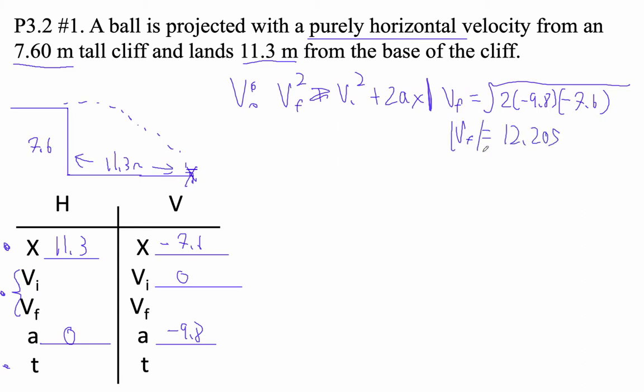But remember, we took the square root of a square. That's the absolute value of it. For sure, it's negative 12.205 meters per second.